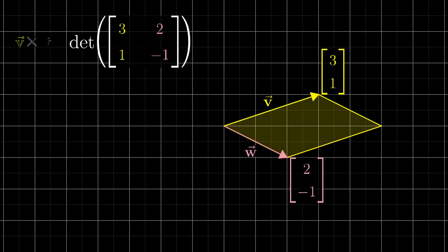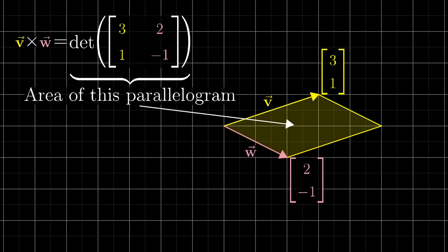So the determinant, which generally measures the factor by which areas are changed, gives the area of this parallelogram since it evolved from a square that started with area 1.